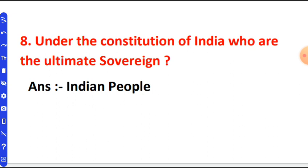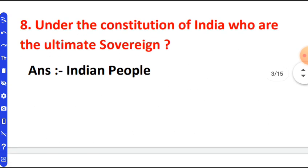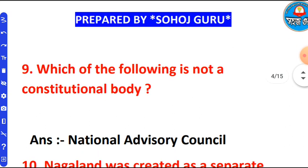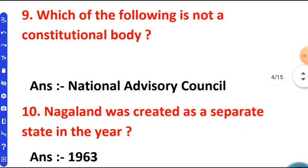The Indian people are the ultimate sovereign power. Even the electorate of the Indian country holds sovereign power. The following is not a constitutional body — the National Advisory Council is not a constitutional body, whereas the National Human Rights Commission is.